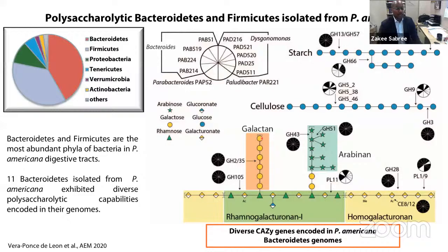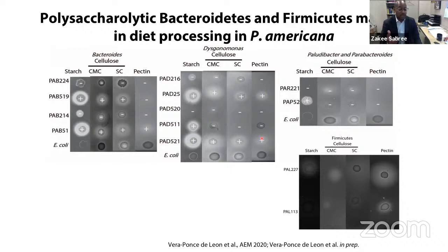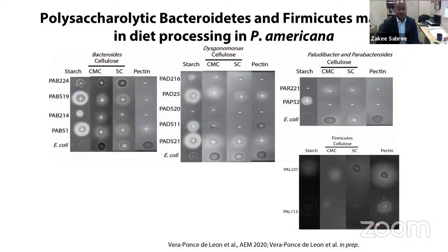By having these cultured isolates, we could also characterize them on media containing complex carbohydrates as the sole carbon source, and found that several were capable of breaking down various carbohydrates. The genome data informed us about what they could actually do functionally, which we could then test in the lab. Cockroaches do feed on lots of dead and decaying plant material, so it's not unlikely these bacteria are contributing to diet breakdown. We also have some Firmicutes isolates — two of which were able to break down pectin — and that's part of a forthcoming manuscript.